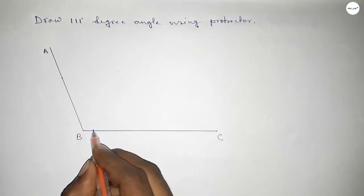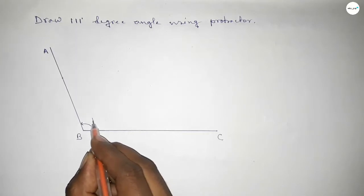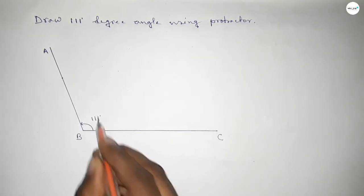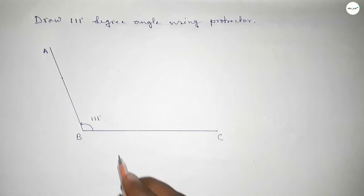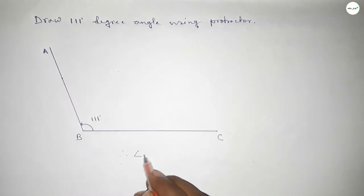So angle ABC up to this is 111 degree. Therefore angle ABC, so angle ABC equals 111 degree.